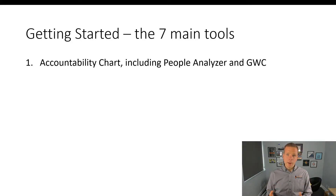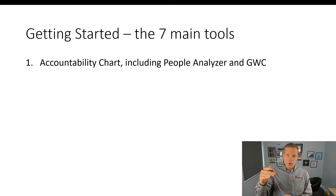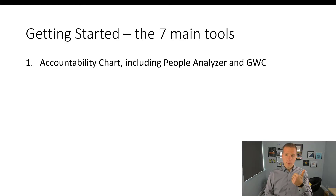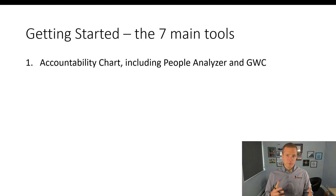The people analyzer is a tool to measure for each person: one, how do they align to the core values — are they above or below the bar — as well as GWC. G is: do they get the role? W is: do they want that role? And C is: do they have the capacity to do it? That capacity could be physical, mental, technical, or emotional.